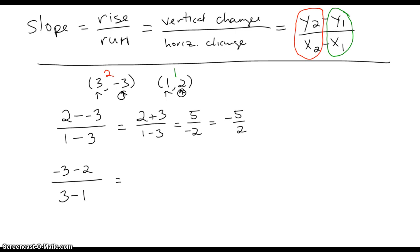Well, a negative 3 minus 2 is the same thing as negative 3 plus a negative 2, if that helps, which equals a negative 5 over 3 minus 1 is 2, which equals a negative 5 halves. The exact same answer. So as you can see, it doesn't matter which point you do first.